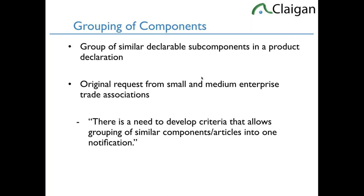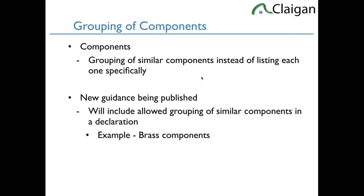There will be guidance coming out — you'll probably see it first in your individual industry association FAQs. The ECHA one will likely come later and be more general, while the ones from individual associations will be more product-type specific. It's basically the idea of grouping similar components into a listing like 'brass components.' You're allowed to put similar components in a single component declaration, but there are going to be rules around it, with some hand-wavy parts. Once you've done it a lot, you know exactly what the rules are.